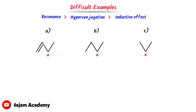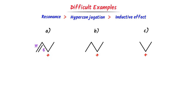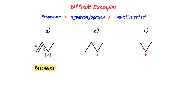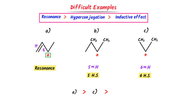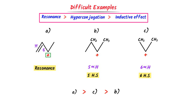Now consider these carbocations. In the first case, there is a pi bond, sigma bond and positive charge, so resonance is possible. In the second case, the charged carbon is adjacent to CH2 and CH3, giving five alpha hydrogens, hence five hyperconjugated structures. In the third case, the charged carbon is adjacent to two CH3 groups, giving six alpha hydrogens, hence six hyperconjugated structures. According to the trend — resonance first — A is most stable. Then C with six hyperconjugated structures, and B is least stable with five.